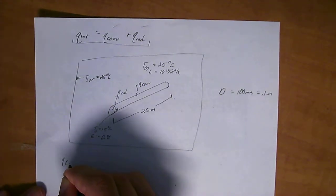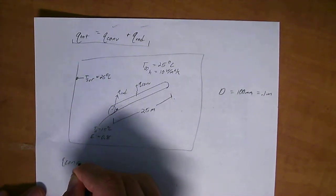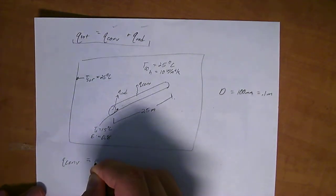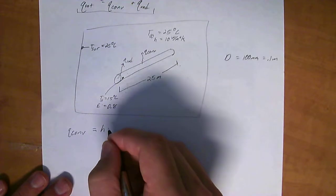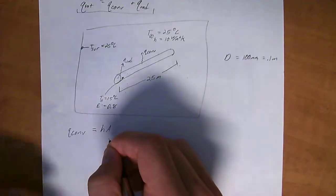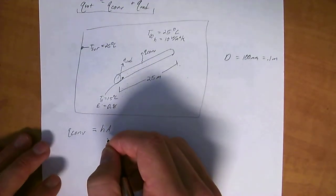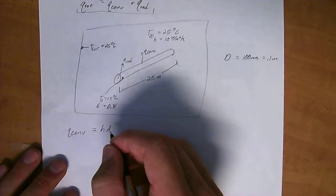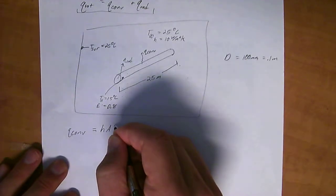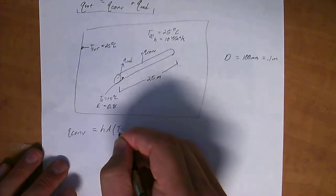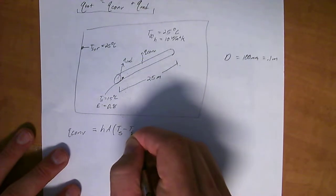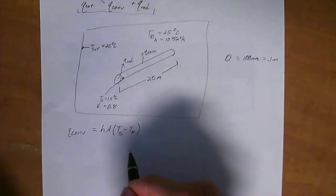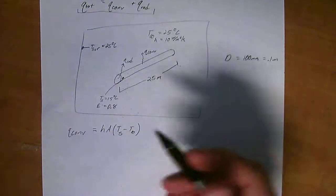Okay. So, we know that the convective heat transfer, convection, the equation is equal to the coefficient of convectivity times the area that is making the convection, making contact with the air or the water or something that is being convected with. And then the temperature of the surface that's giving off the heat, minus the temperature of infinity, which is the temperature of the ambient air, basically. T infinity is basically the ambient conditions.